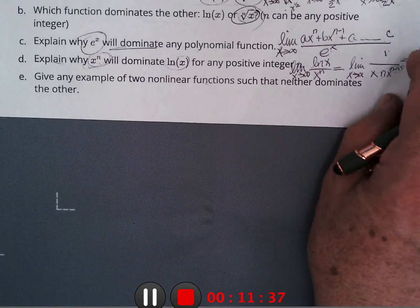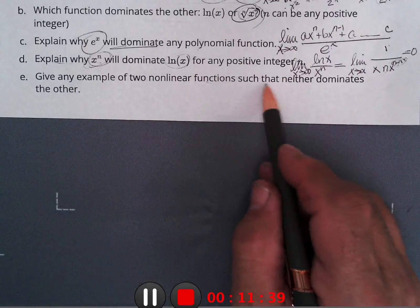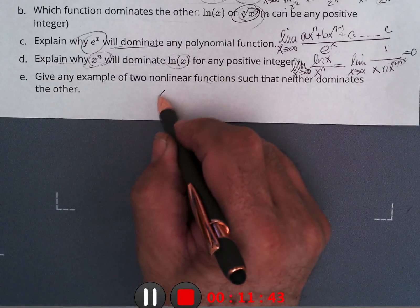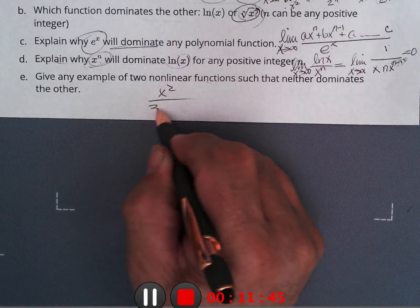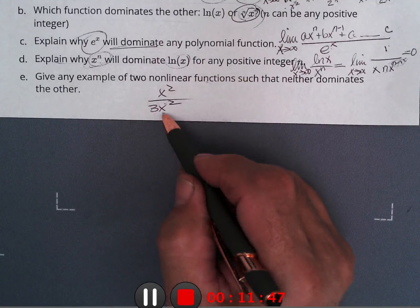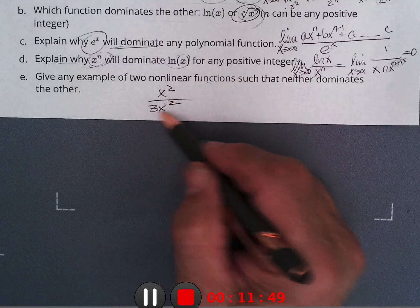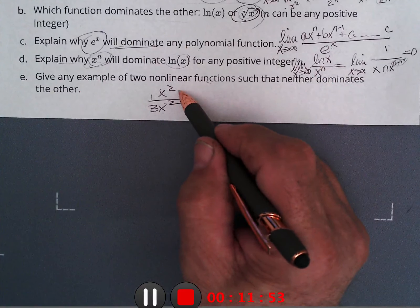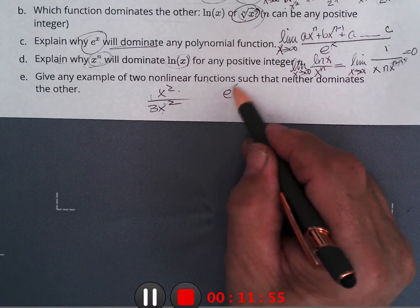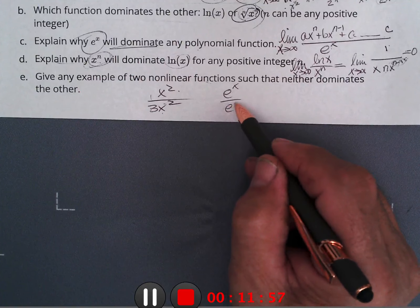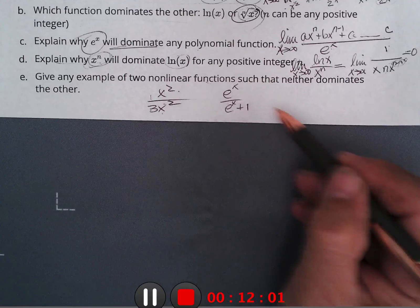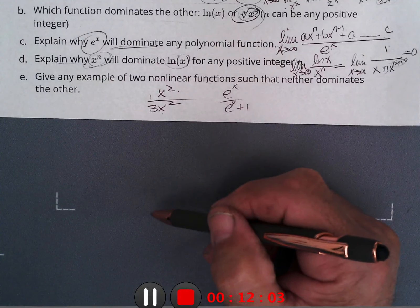Give two non-linear functions where neither dominates. x squared and 3x squared — take the derivative of each and they're both gone, giving a ratio of 1/3. You could also use e^x and e^(x+1): neither one will dominate the other.